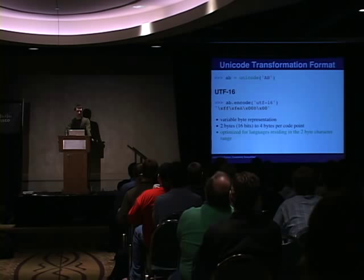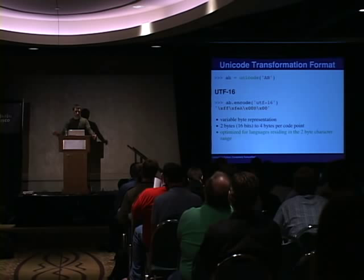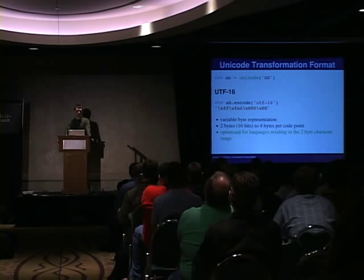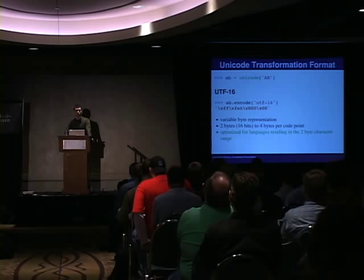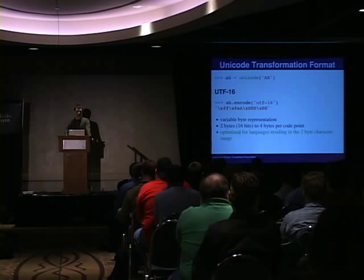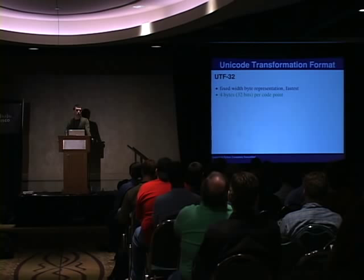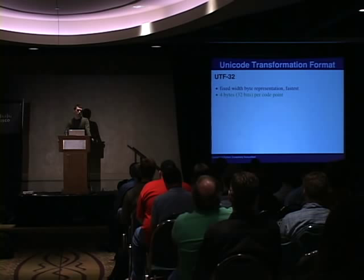UTF-16 is also a variable byte representation, but it starts at two bytes and goes up to four bytes, so it's a little more optimized for more complicated character sets like Japanese. That also means it will take up a little more memory, but it might be faster if you know you're working entirely in Japanese. Note that all Unicode characters are encodable by any UTF variant. UTF-32 is completely fixed width — every character is four bytes guaranteed. Python doesn't even support UTF-32.